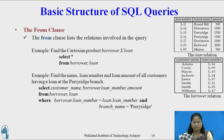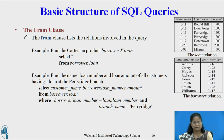We could have written BORROWER.CUSTOMER_NAME instead of CUSTOMER_NAME in the SELECT clause. However, since the attribute CUSTOMER_NAME appears in only one of the relations in the FROM clause, there is no ambiguity when we write CUSTOMER_NAME.